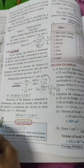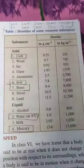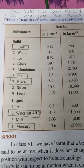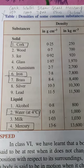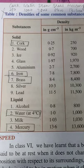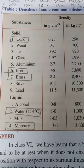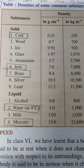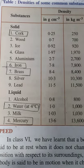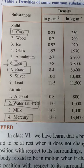Before we close, just take this into consideration: from the density table, only the densities of cork, iron, brass, water, and mercury you have to learn. The rest of the table is not required.